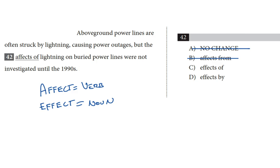So that leaves us with effects of and effects by. So let's plug in our remaining choices and see which one follows conventional usage. The effects of lightning on buried power lines, that sounds pretty conventional to me, or the effects by lightning on buried power lines, that doesn't feel like correct usage. So that leaves us with C. Our answer is effects of.